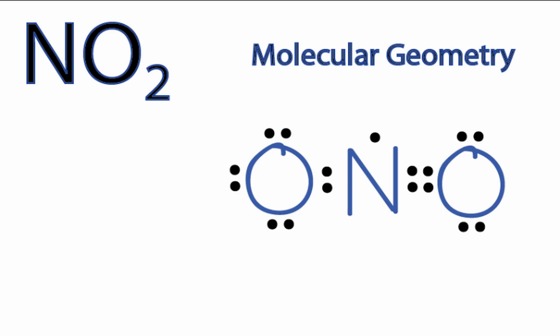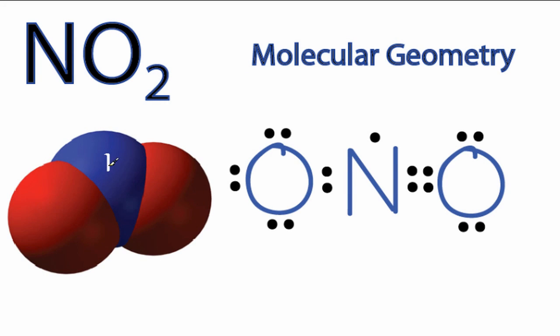It's going to look something like this. We have our nitrogen in the center, and then on either side we have the oxygens. You can see it's not a linear molecule, it's actually a bent molecule. We have that one electron right up here that's pushing these two oxygens away. That's why we have this bent molecular geometry for NO2.